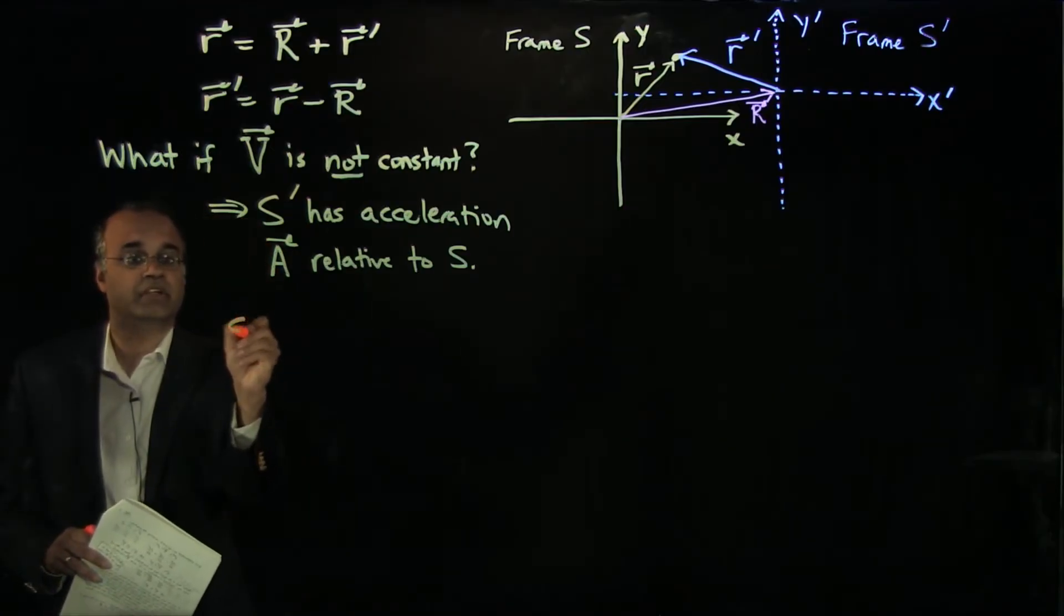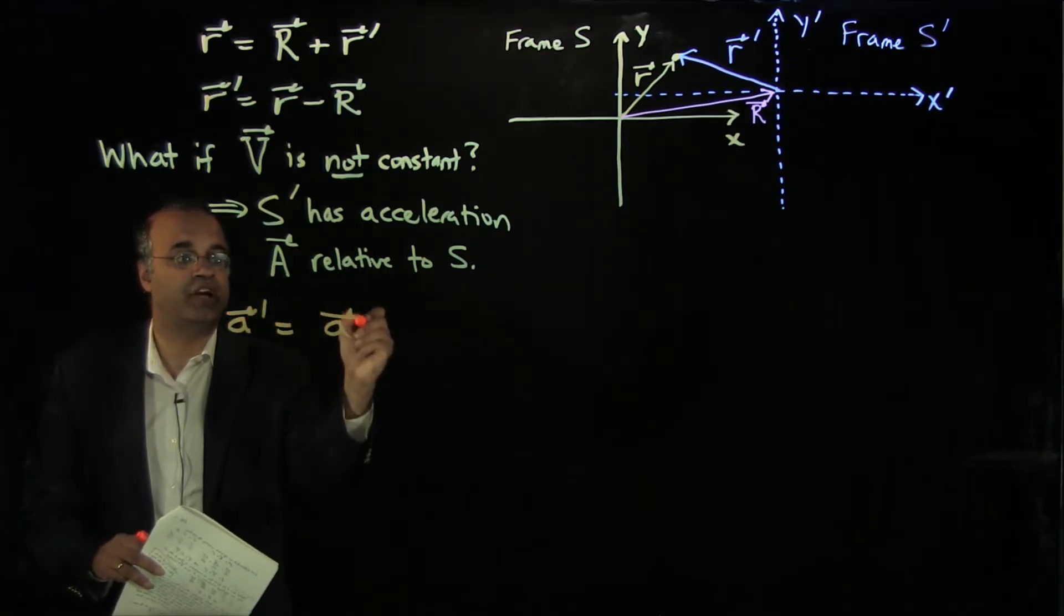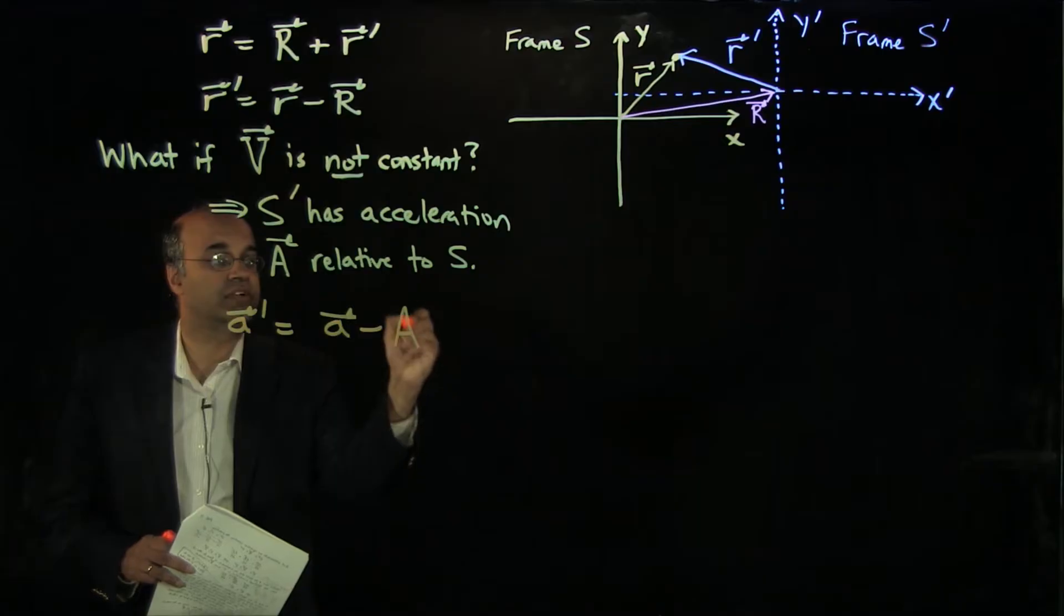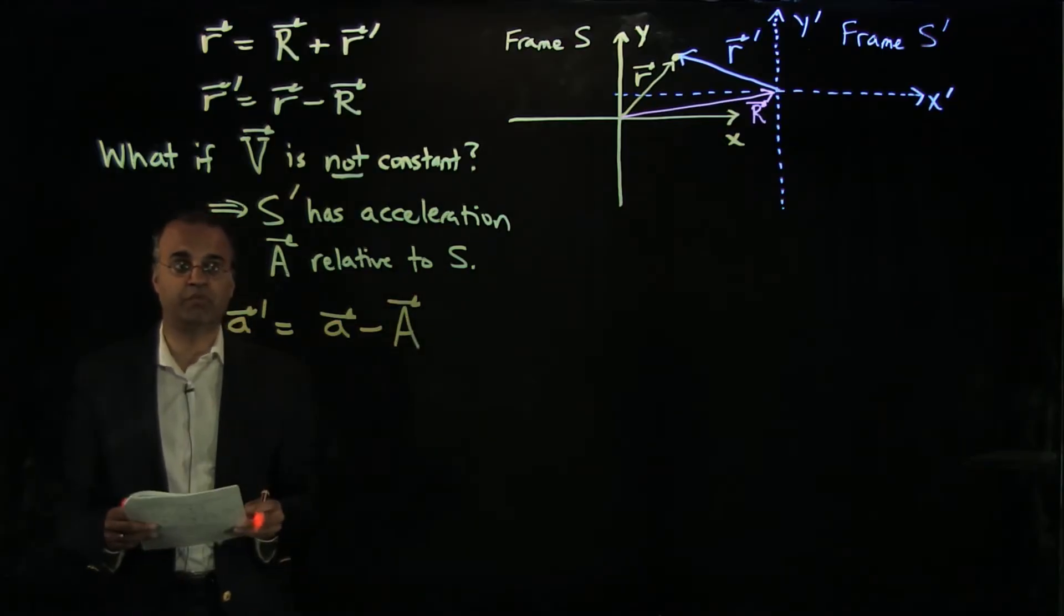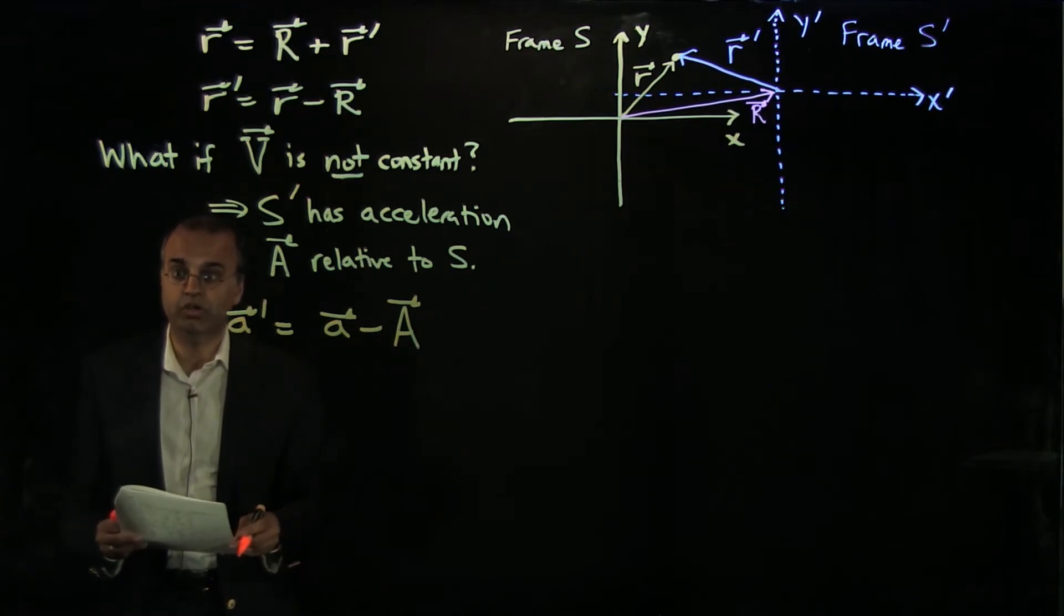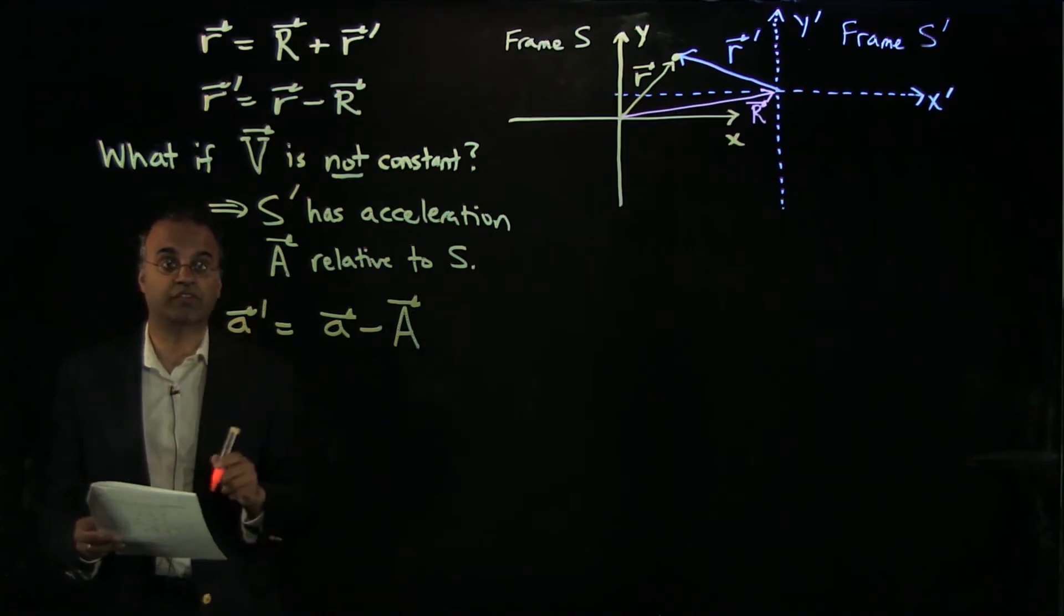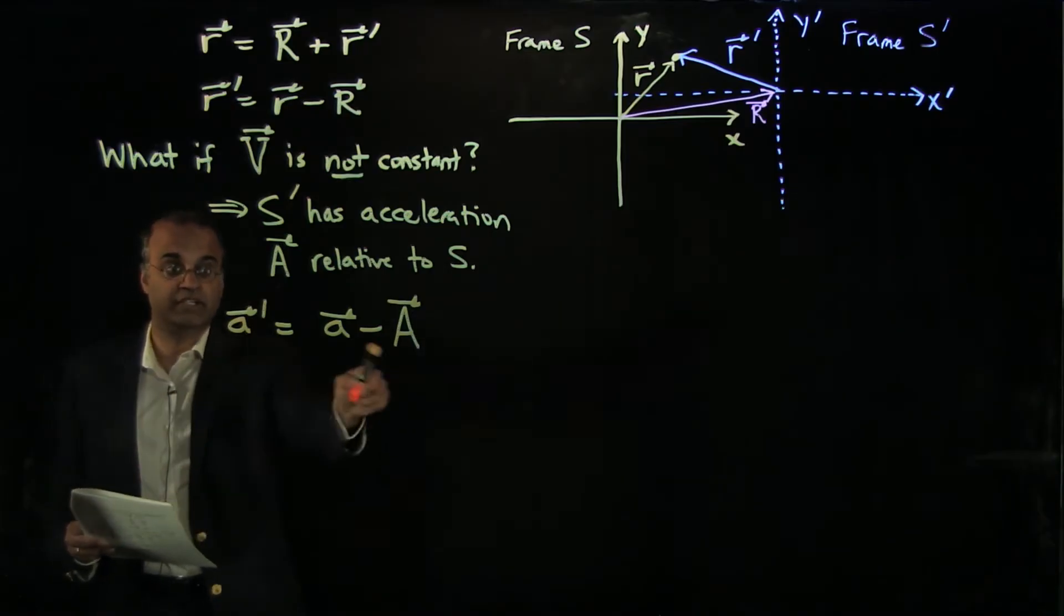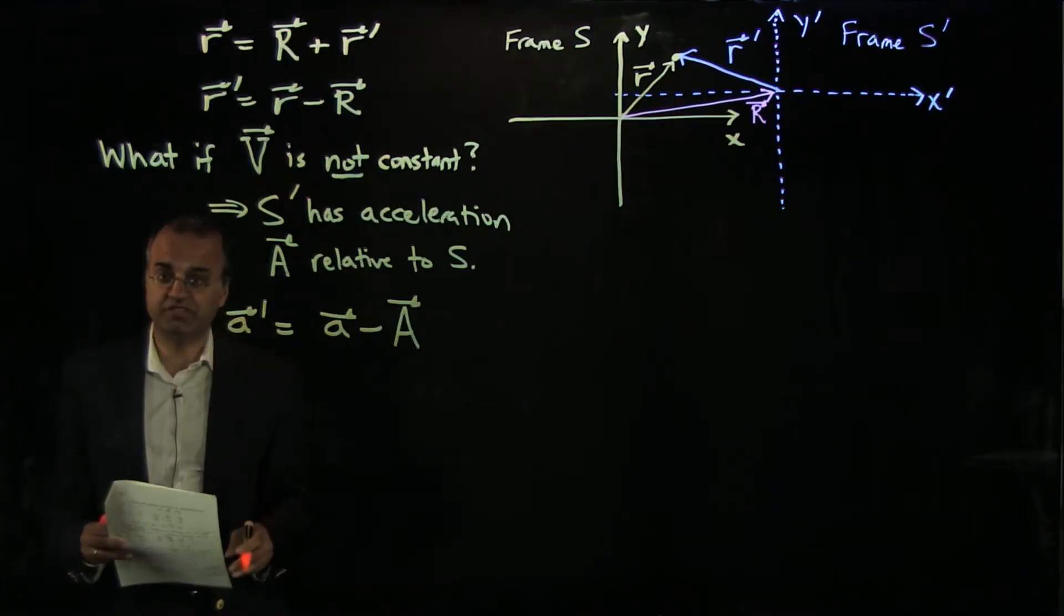In a non-inertial frame, the acceleration a prime is equal to the acceleration of frame S minus capital A, the acceleration of frame S prime relative to S. Remember, capital A is 0 for S prime being an inertial frame when capital V is a constant. But if capital V is not a constant, then capital A is not 0. So you will measure different accelerations in these different frames.